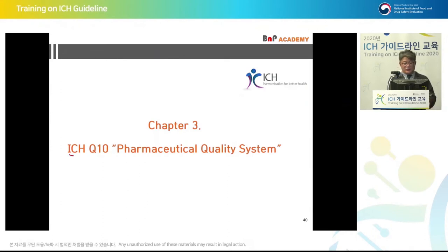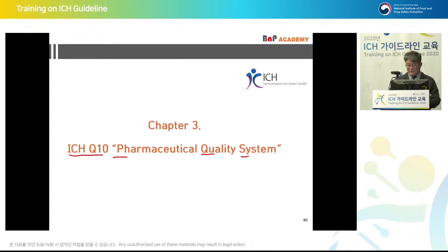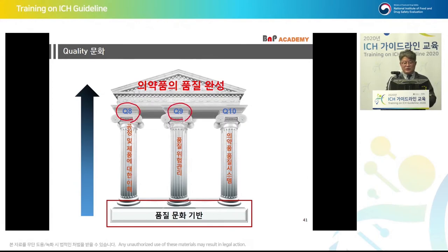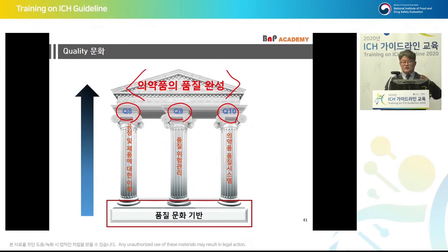The next topic is Q10 — PQS, or pharmaceutical quality system. When it comes to quality culture, there are three pillars: Q8, Q9, and Q10. When they are well implemented, the quality of pharmaceuticals can be well sophisticated and improved. The culture to do this is the quality culture.